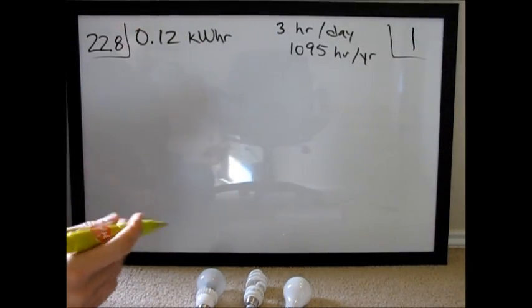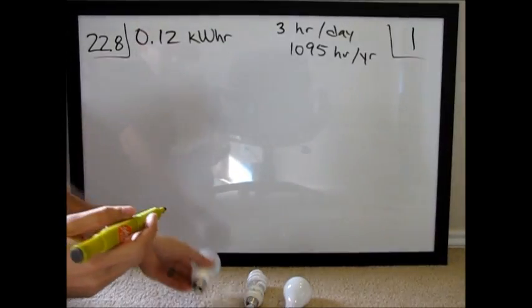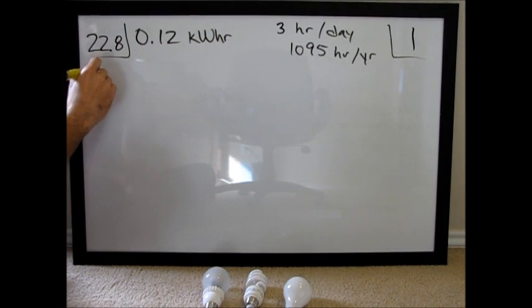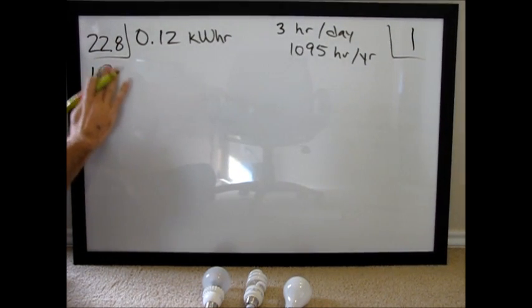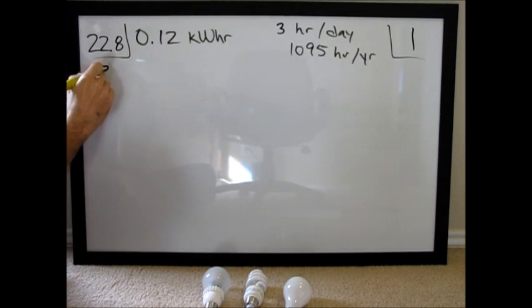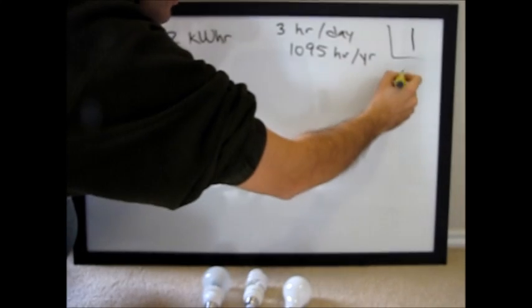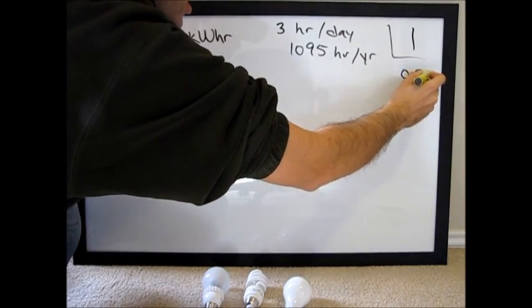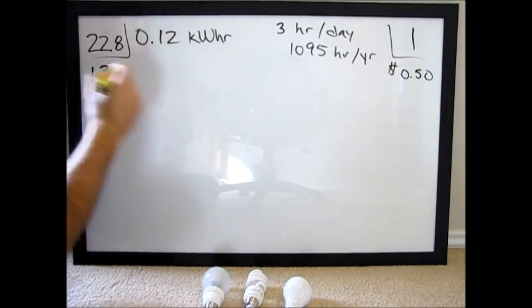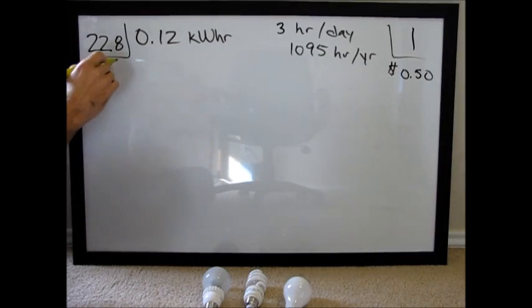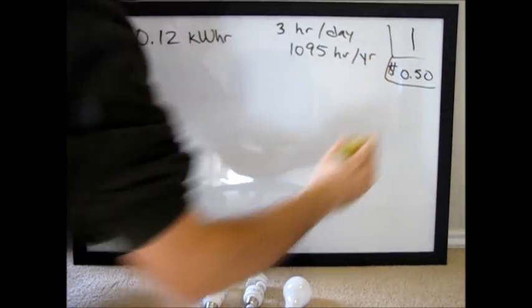So also cost, this light bulb, I just looked it up at Home Depot, $12.97. Over here, let's just call it 50 cents, they're really cheap. So those are our assumptions.